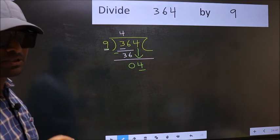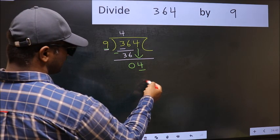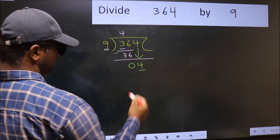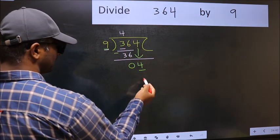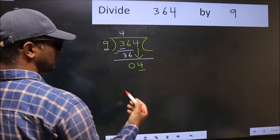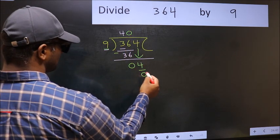Instead, what you should think of doing is, which number should we take here? If I take 1, we will get 9. But 9 is larger than 4. So what we should do is, we should take 0. So 9 into 0, 0.